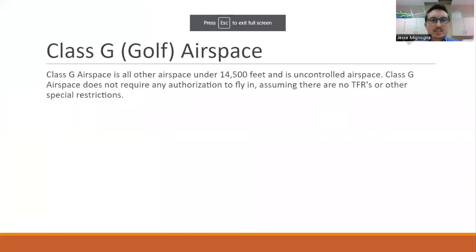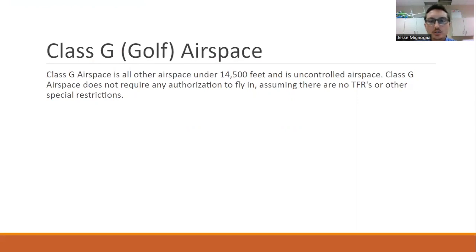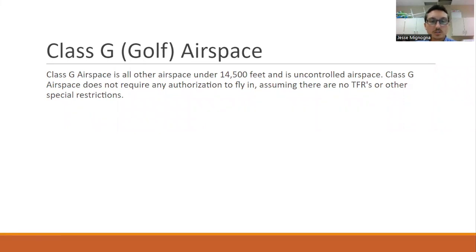The last airspace to talk about is class G — Golf airspace. Think of it like this: G for good — this is where you can fly. This is any airspace that's not any other type of airport or designated airspace. This is basically where you can fly your drone, and it goes up to 14,500 feet MSL. Thank you for watching the video — let me know if you have any questions, and we'll go over longitude and latitude in the next one.